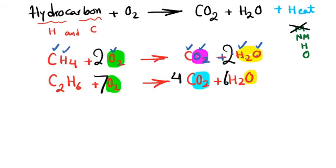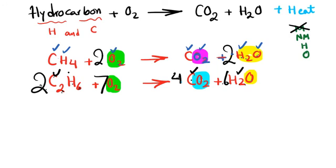Double check all elements: carbon — two times two equals four on each side ✓; hydrogen — two times six equals twelve on the left, six times two equals twelve on the right ✓; oxygen — four times two equals eight plus six equals fourteen, and seven times two equals fourteen ✓. Balanced.